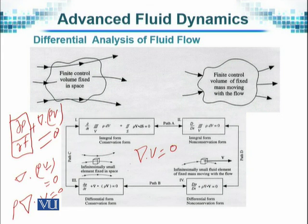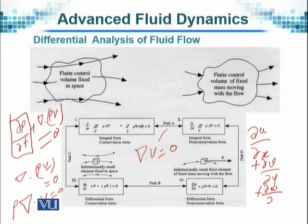This is a very simplified form in which there are two assumptions: density is constant and the time dependency is zero. So del dot v equals zero is the famous continuity equation in vector form. If I have to write it in rectangular coordinates form, it will be du by dx plus dv by dy plus dw by dz is equal to zero.